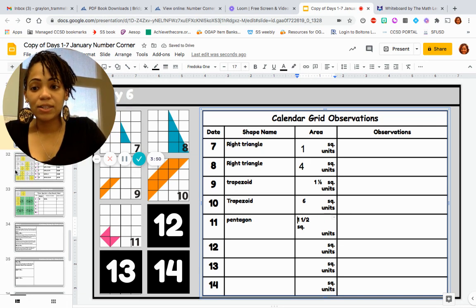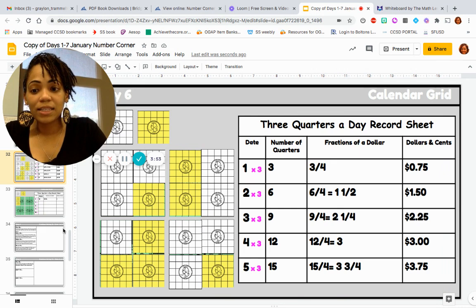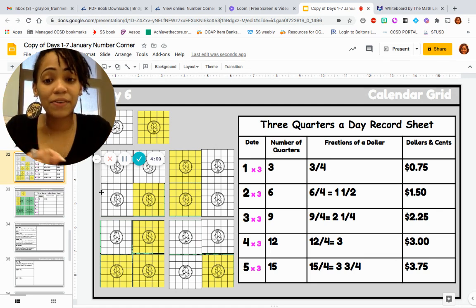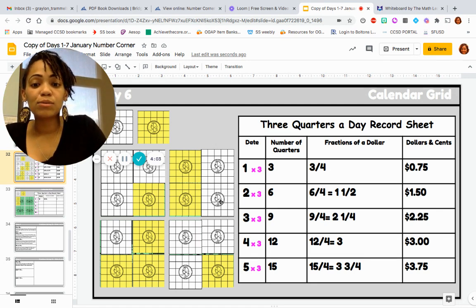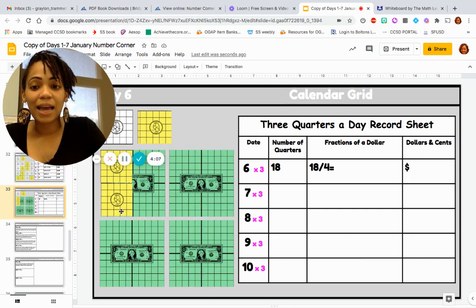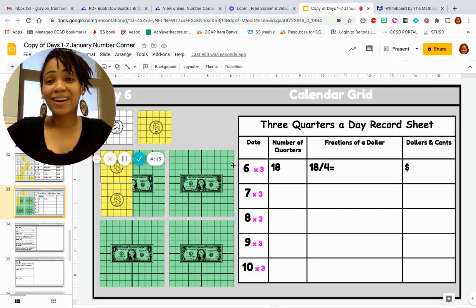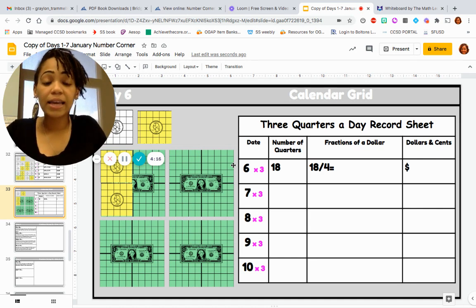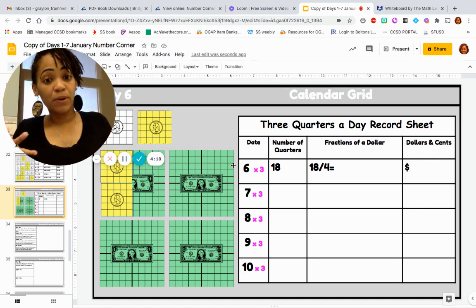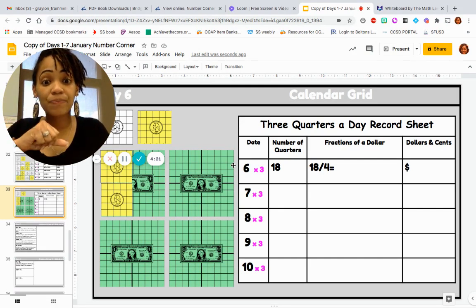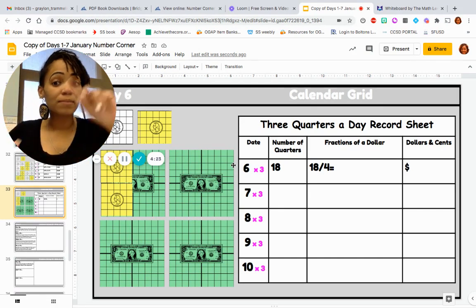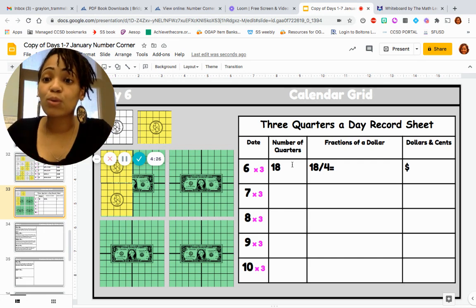Now let's think about our calendar collector. We are collecting three quarters a day. Today is the sixth day for Number Corner in January, so we have one, two, three, four, five, and I have already added our sixth day. You see that here in yellow since we're updating this very quickly. And we know in order to figure out the number of quarters, we can multiply the day for Number Corner times three because every day we're collecting three quarters. So it's the sixth day of Number Corner times three would give us 18 total quarters.